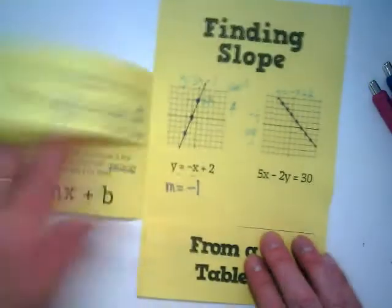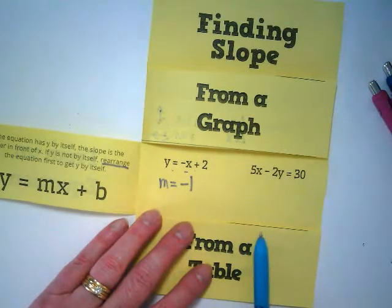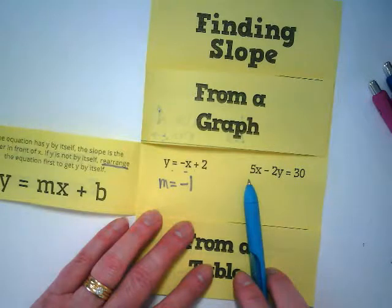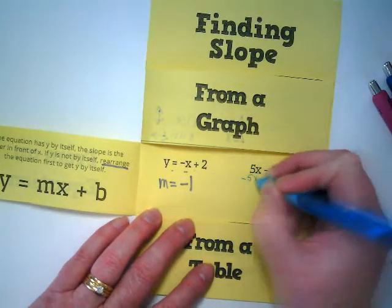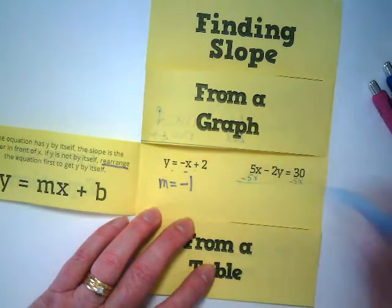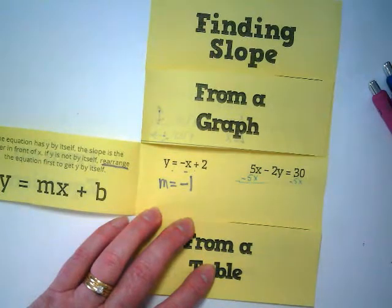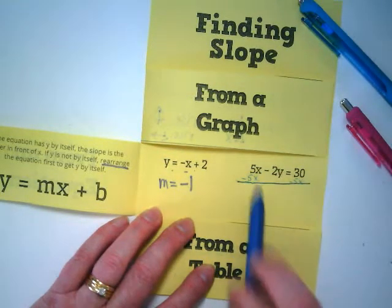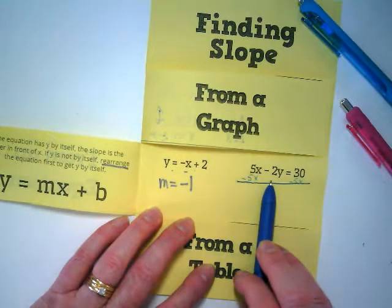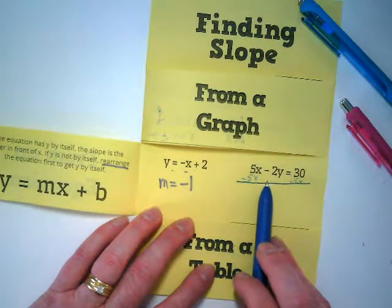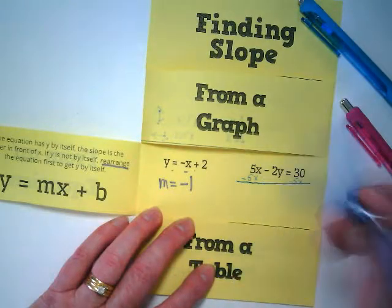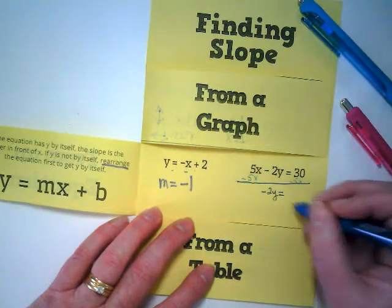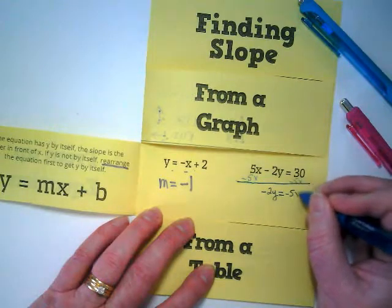Let's look at the second equation. Is the y by itself? No. What's the first thing we want to move then? The 5x. And we're going to keep it together. It's a positive 5x now. How do we move it? Subtract it from both sides. 5x minus 5x is 0. What does that leave me with? This is where people make mistakes, though. And some of you did this in your test. I saw the negative disappear. You need to make sure that you keep that as negative 2y. Is equal to negative 5x plus 30.